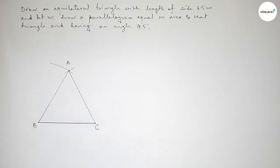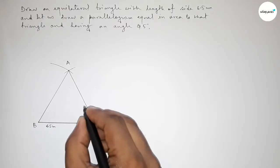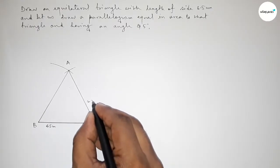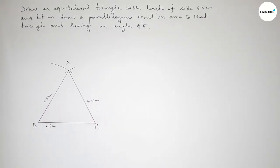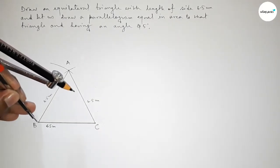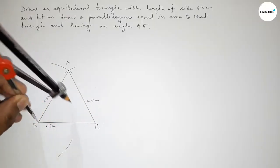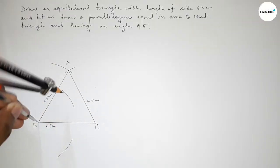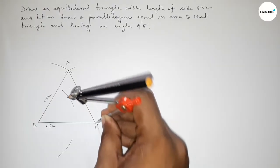We got an equilateral triangle. This side is 6.5 centimeters, this side 6.5 centimeters, and this side also 6.5 centimeters. Now we have to bisect line BC, so placing the compass and taking greater than half of BC, drawing arcs on both sides.